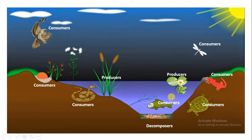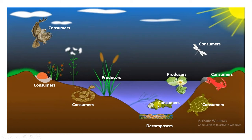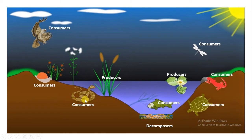Consumers are classified into primary consumers, secondary consumers, and tertiary consumers. Primary consumers are dependent on the producers — examples include zooplankton, insects, and small fishes. Secondary consumers are dependent on the primary consumers, like snakes and large fishes which consume zooplankton, insects, and small fishes. Animals dependent on the secondary consumers are called tertiary consumers.